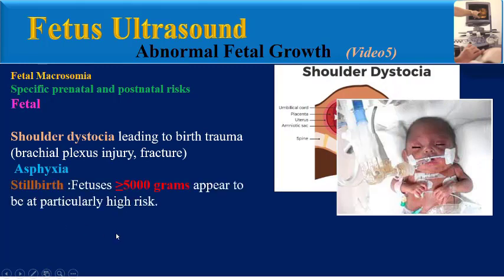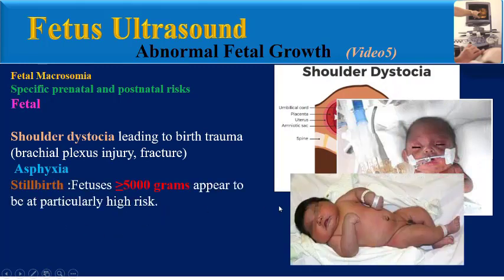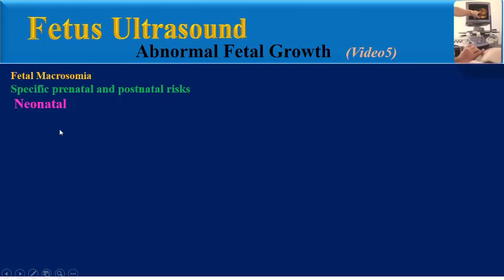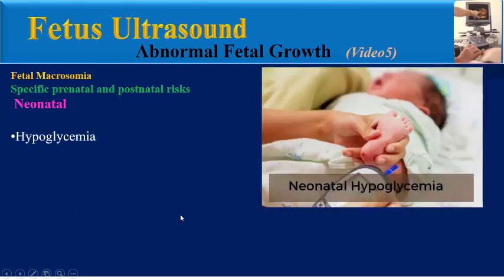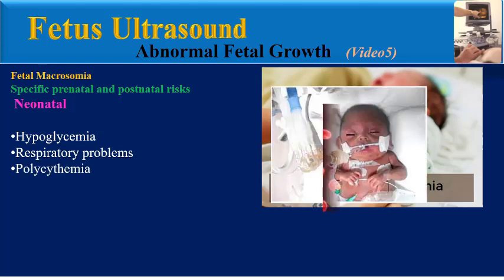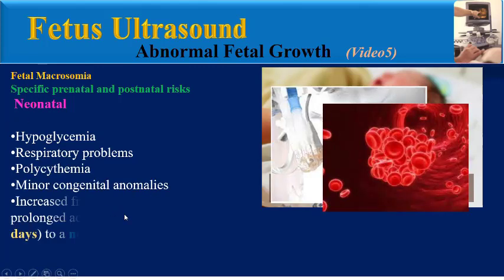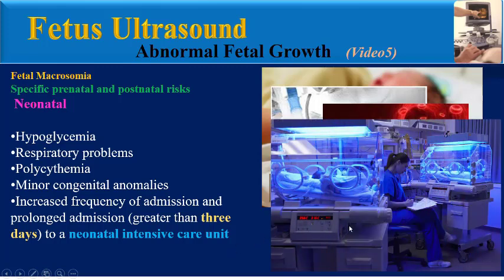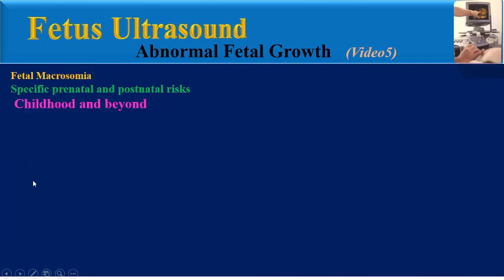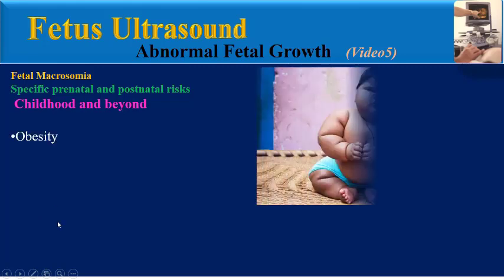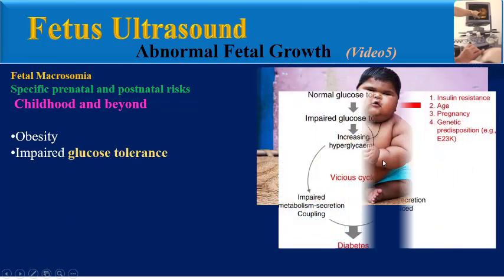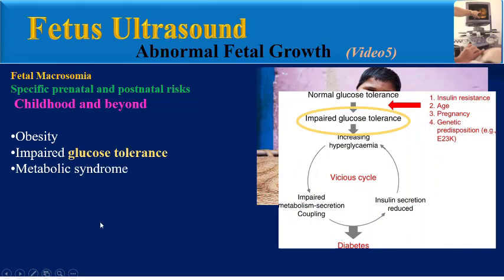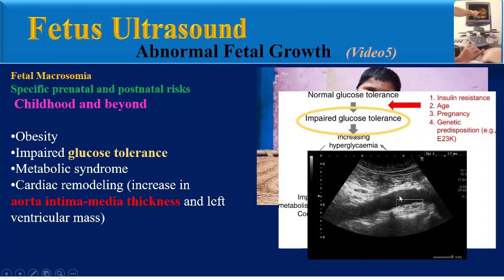Risks in the neonatal period include hypoglycemia, respiratory problems, polycythemia, minor congenital anomalies, and increased frequency and prolonged admission greater than 3 days to a neonatal intensive care unit. Risks in childhood and beyond include obesity, impaired glucose tolerance, metabolic syndrome, and cardiac remodeling — specifically increased aortic intima media thickness and left ventricular mass.